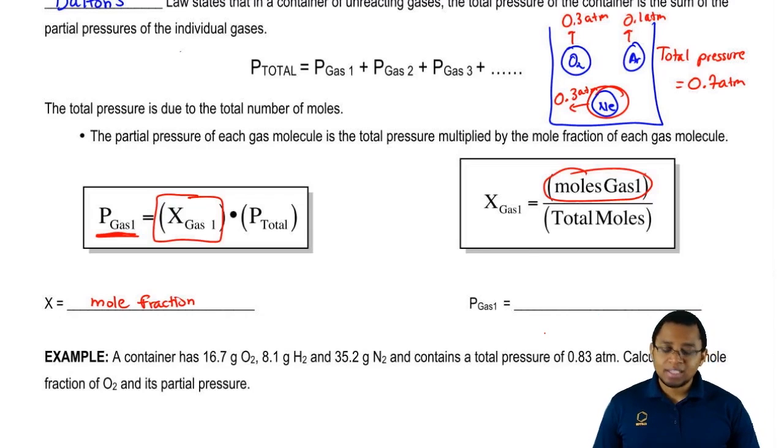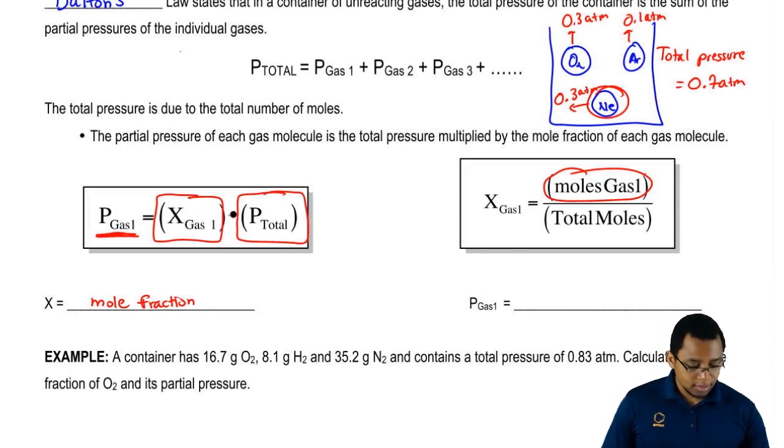Once we get the mole fraction of a gas, we would multiply it times the total pressure. That would then give me just the pressure of that one gas. And here this is just partial pressure.